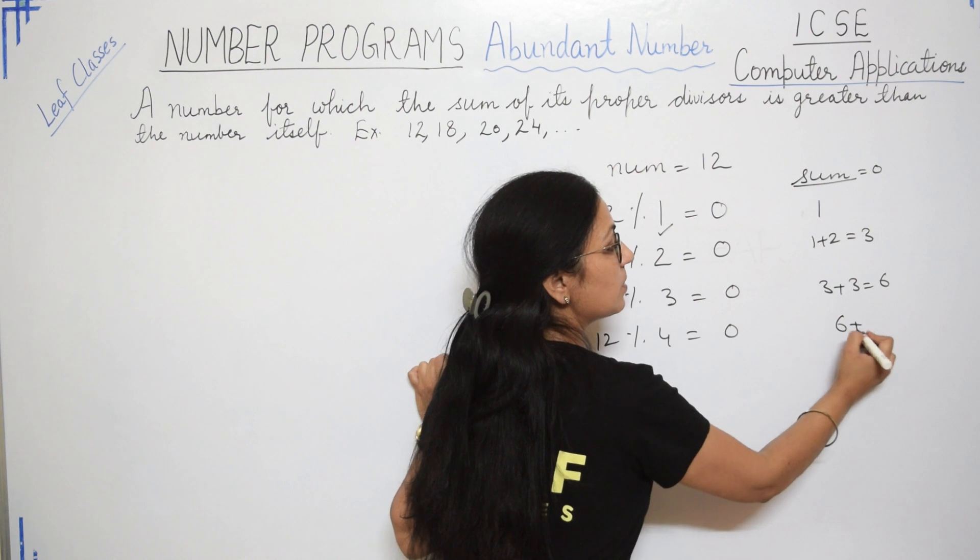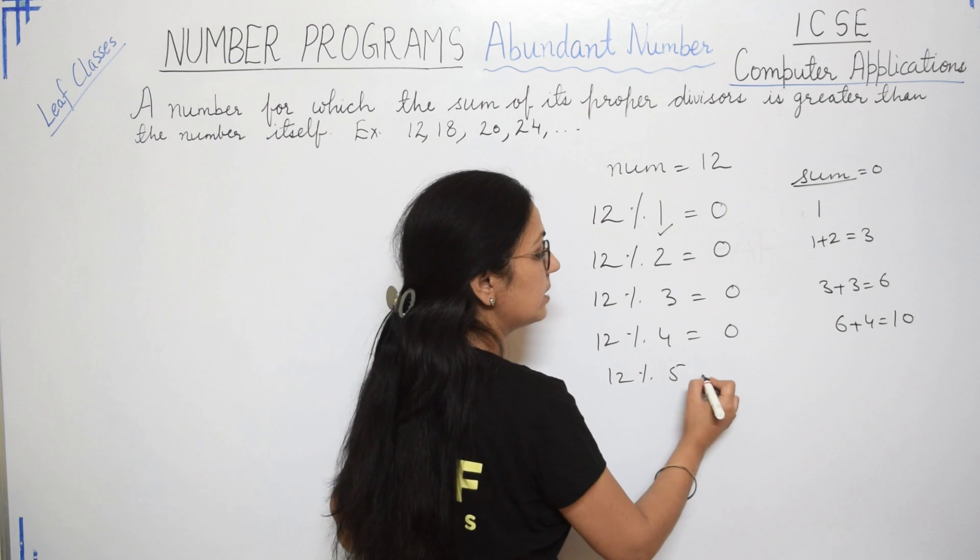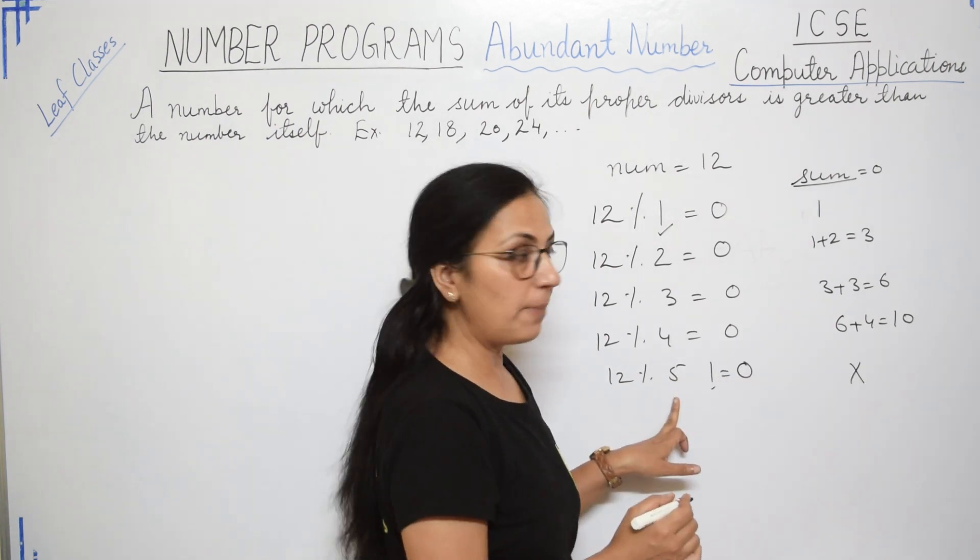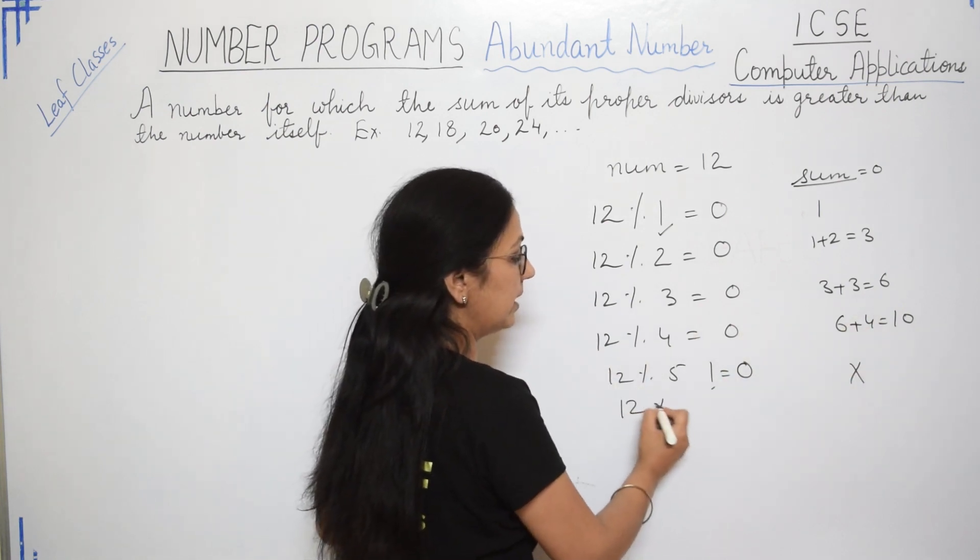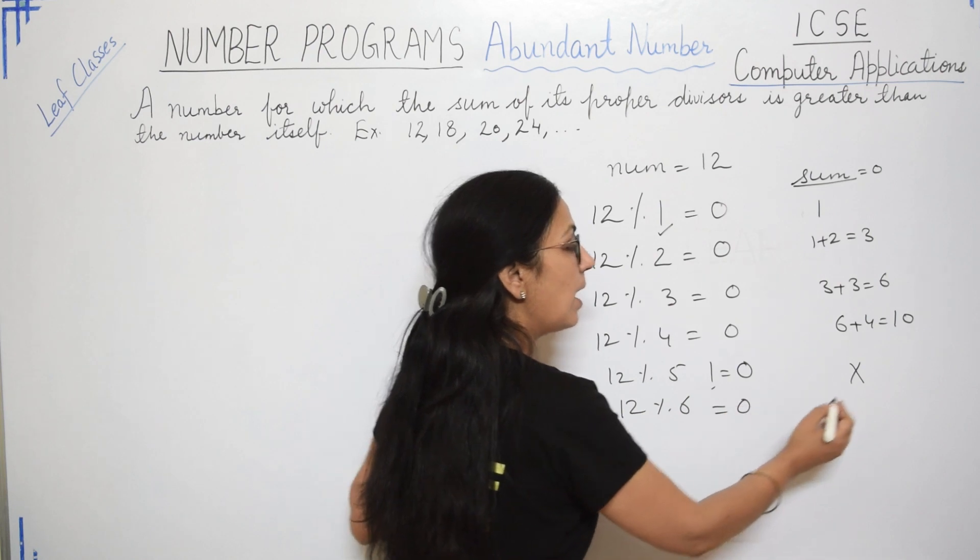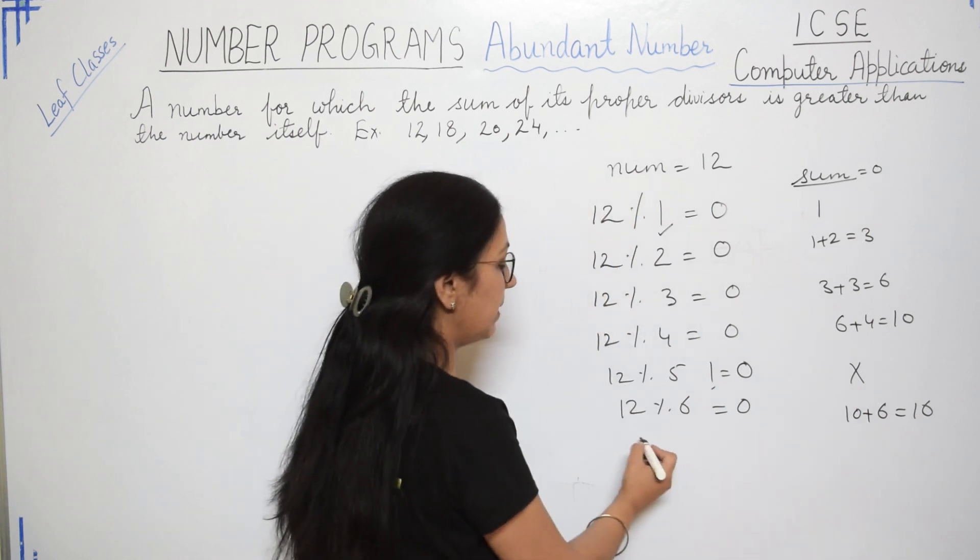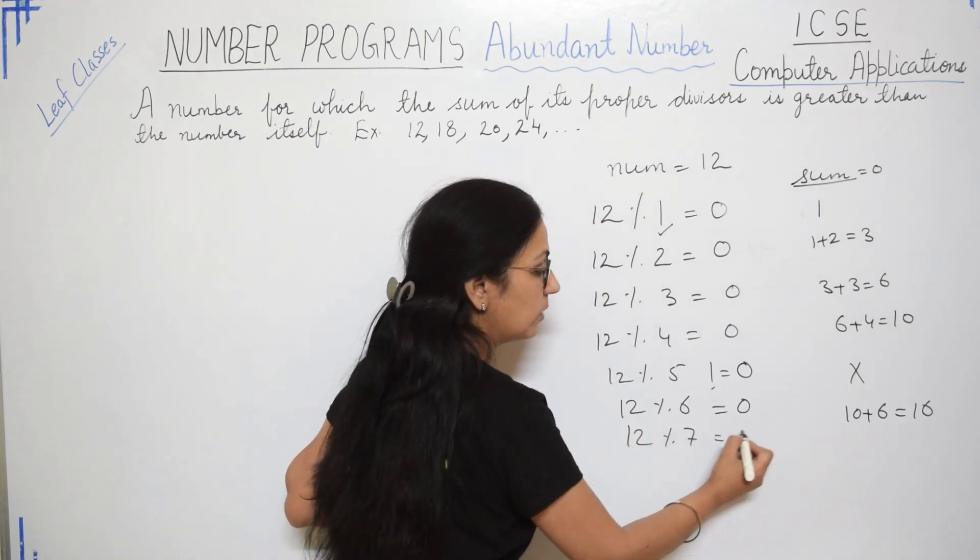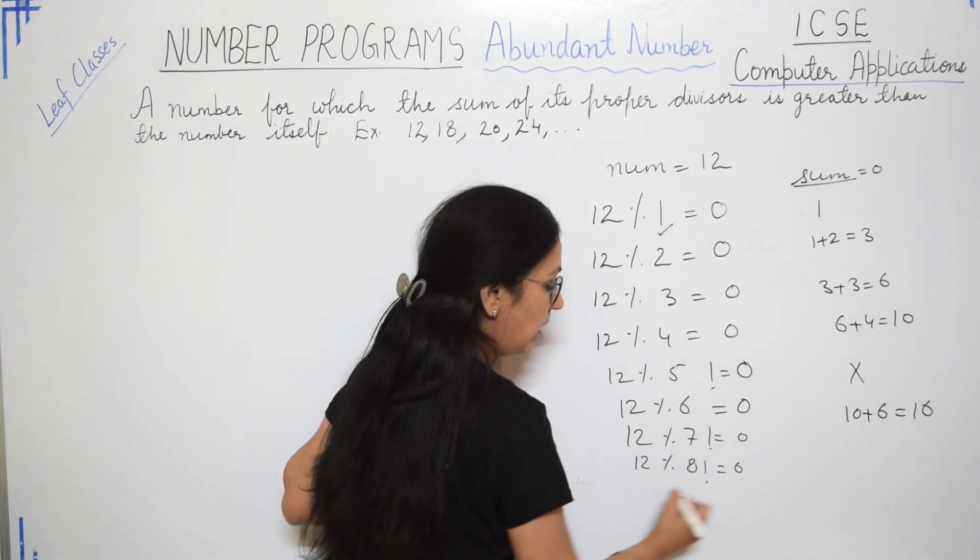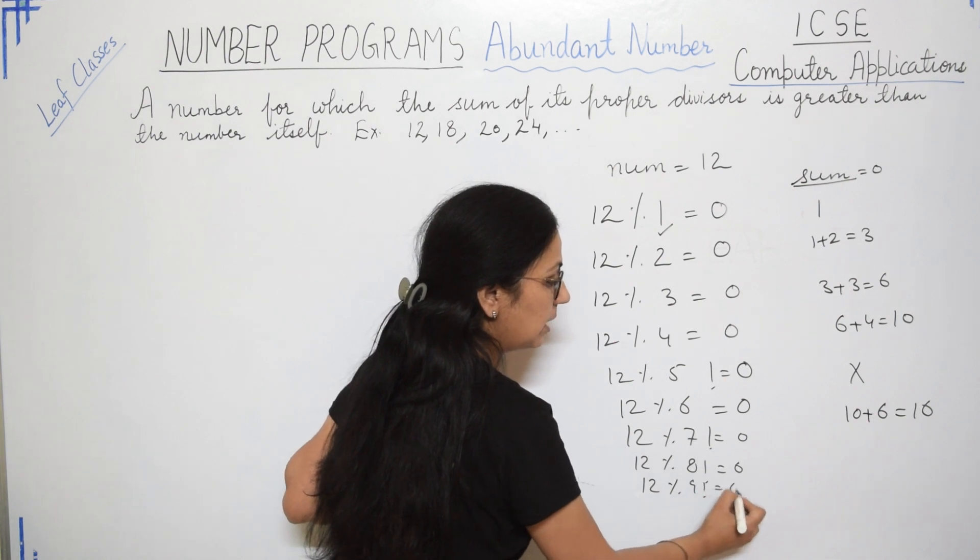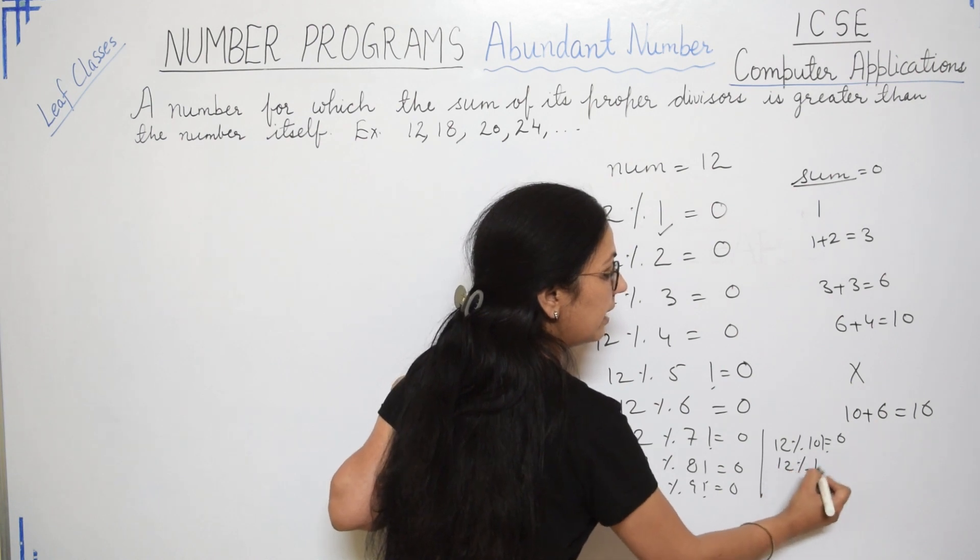Then 12 modulus 4 is equals to 0. Yes. So here it will be 6 plus 4 equals to 10. 12 modulus 5 is not equals to 0. It is not a proper divisor. So we will not add 5 to this 10. Then 12 modulus 6 will be equals to 0. And you will add 10 to this. It will be 16. Similarly, you will be doing 12 modulus 7. It will not be 0. 12 modulus 8 will not be 0. 12 modulus 9 will also not be 0. 12 modulus 10 will not be 0. 12 modulus 11 will not be equals to 0.